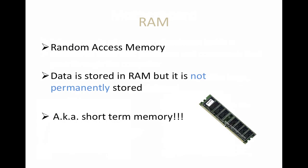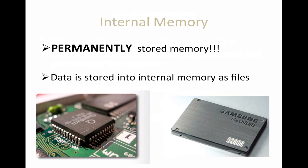RAM — random access memory — is easy to understand but people often mix it up with internal memory. Data is stored in RAM, but it's not permanently stored; it's short-term memory. RAM is available in hardware card form, measured in gigabytes, and sits in slots attached to the motherboard. The more RAM installed, the more applications can run quickly and smoothly.